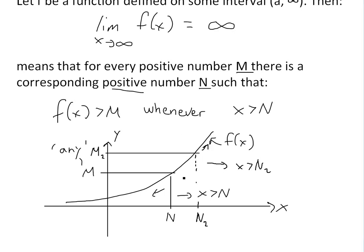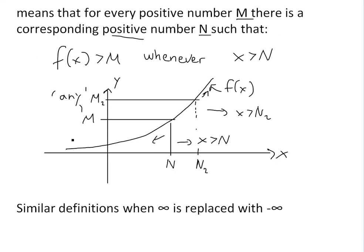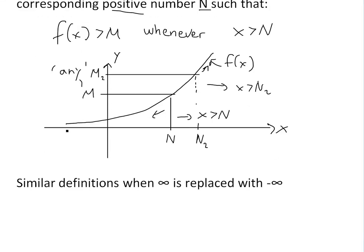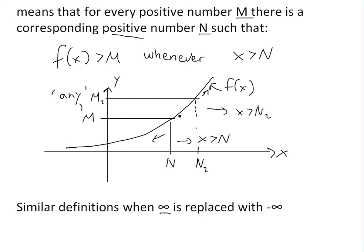So that's basically the definition of it. And now one last point I want to state is basically similar definitions or precise definitions. You'll get similar when the infinity symbols are replaced with negative infinity. So instead of going up like this you can either go down to negative infinity. Or you can go to positive infinity at negative infinity as x approaches negative infinity. So there's a lot of ways.